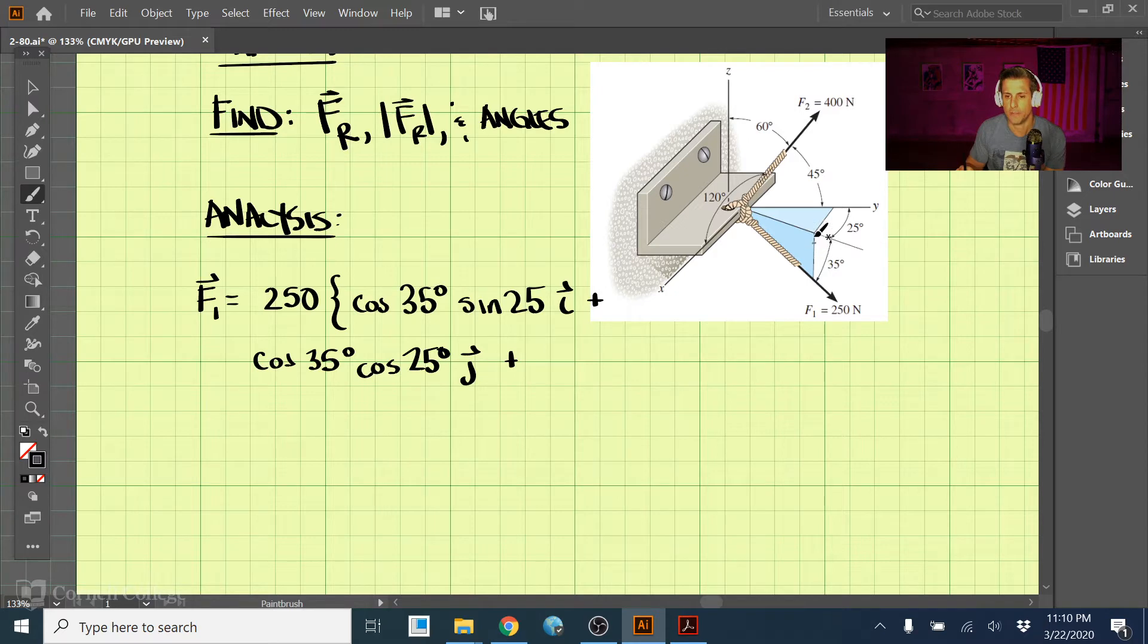All right, and then lastly we need to do the z direction. Well, we know that it's 35 here, but it's going to be downwards in the z direction if it's pointed upwards here, so we just have negative sine of 35 degrees in the k direction. So this is the x, this is the y, and then this is the z. If we want to simplify that, we have 86.55i and then 185.6j and then negative 143.39k. So that's that vector.